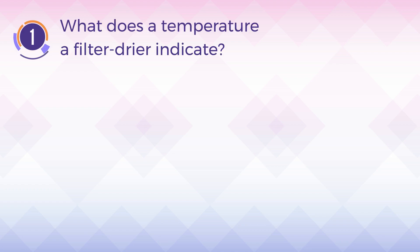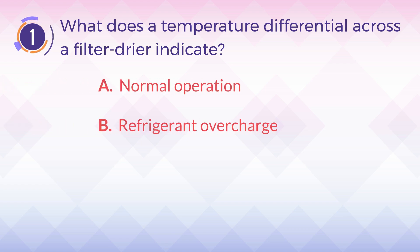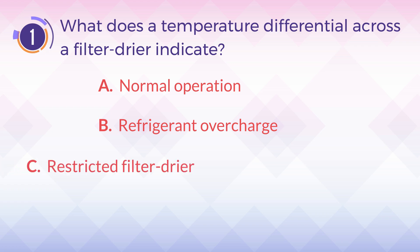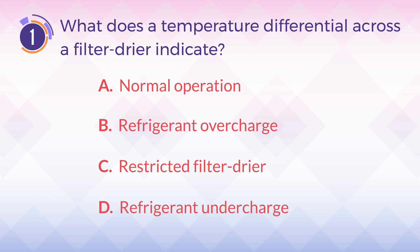Number 1. What does a temperature differential across a filter dryer indicate? A. Normal operation. B. Refrigerant overcharge. C. Restricted filter dryer. D. Refrigerant undercharge.